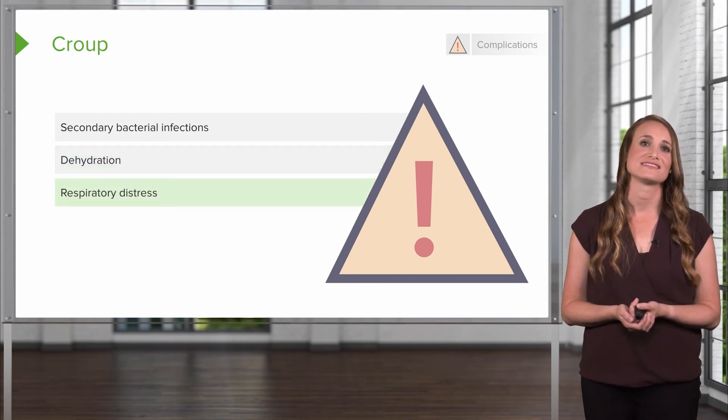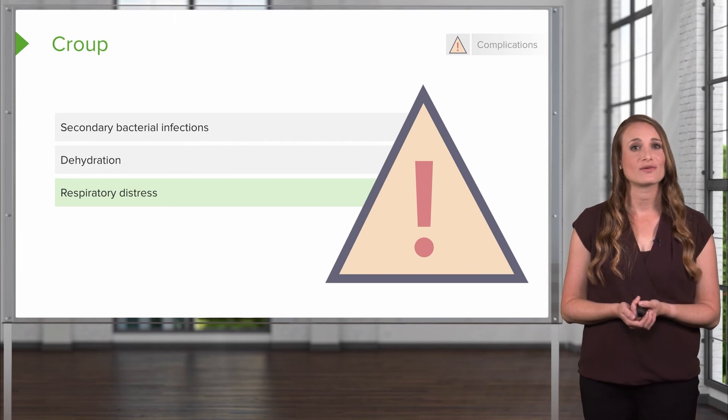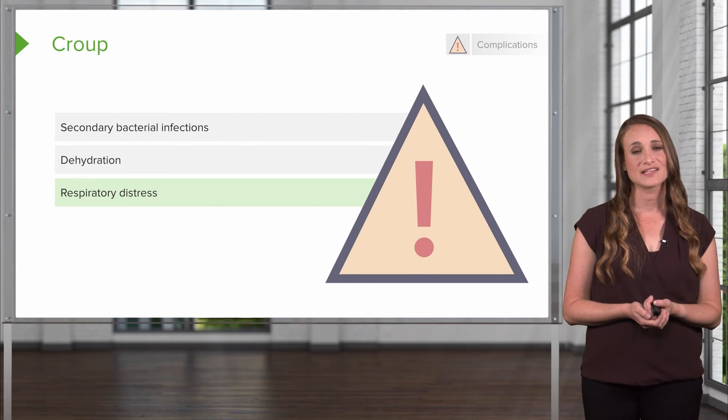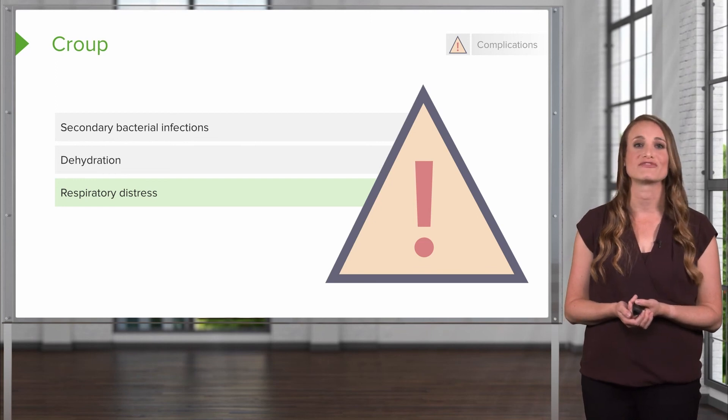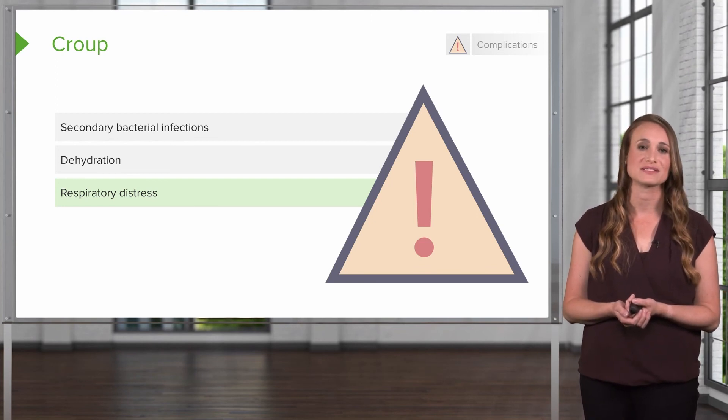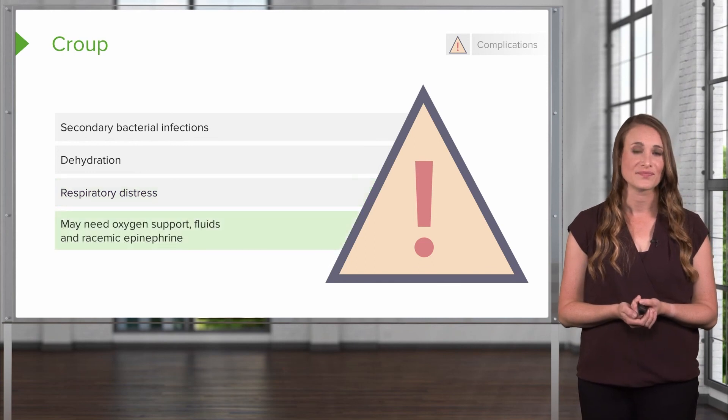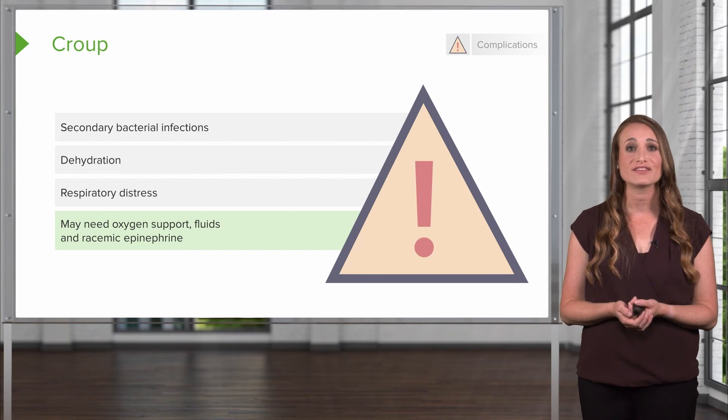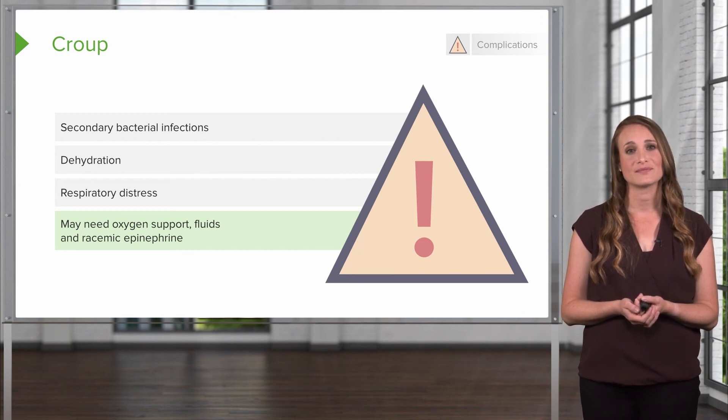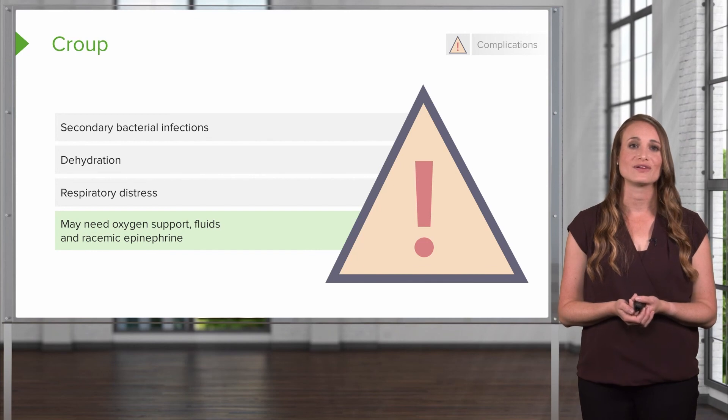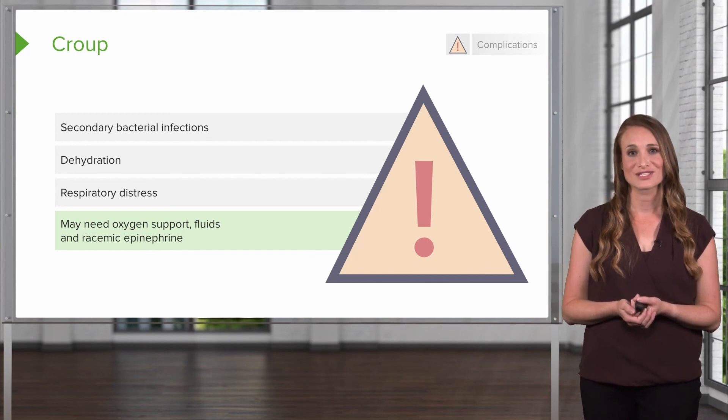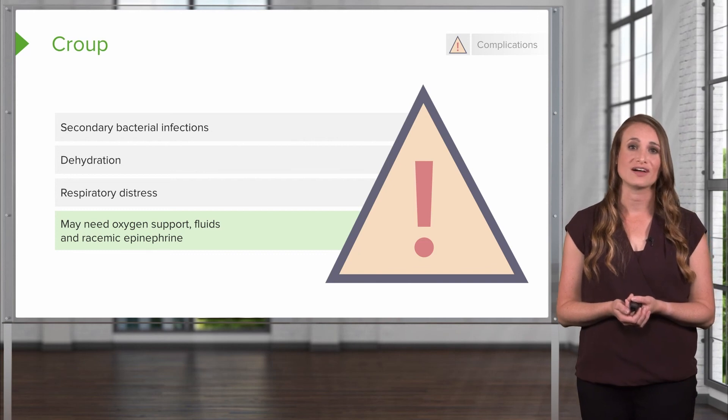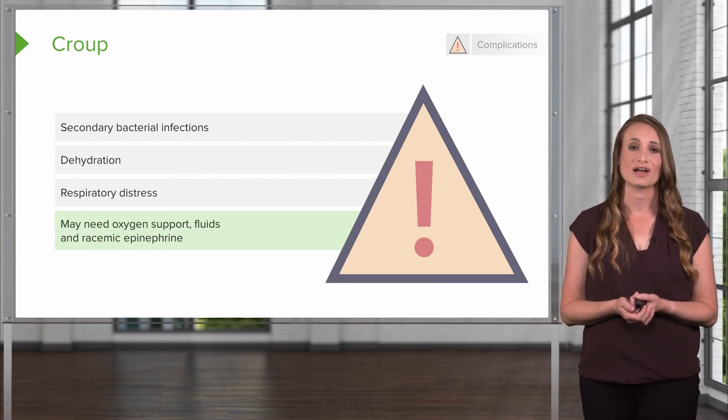Respiratory distress can also develop with croup. Some children are going to develop complications that need additional respiratory support. It's important for the clinician to perform frequent and thorough respiratory exams to watch for signs of decline. The child may need additional support including oxygen, IV fluids, and racemic epinephrine. Children with increased risk factors include those with a history of lung or neurologic disorders, such as asthma, and children who are more likely to develop severe croup symptoms may require hospitalization.